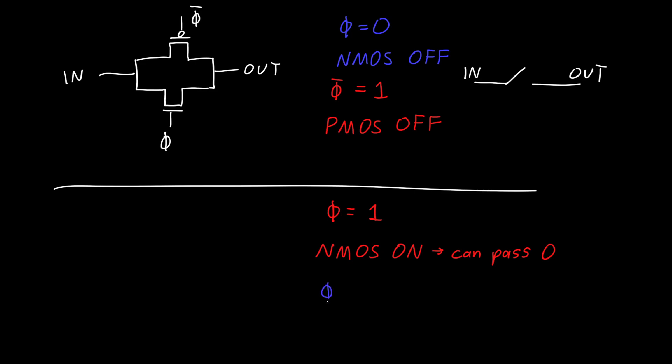And similarly, our knot phi signal, knot phi, is equal to one. And so the PMOS is on. And the PMOS can pass VDD very well. And so together, either the NMOS or the PMOS will be doing most of the work.